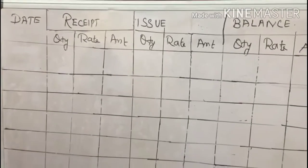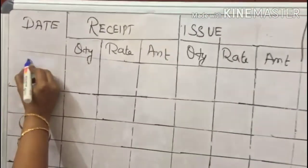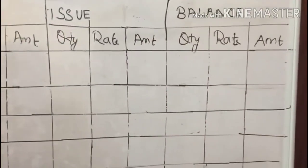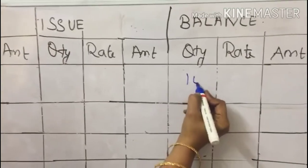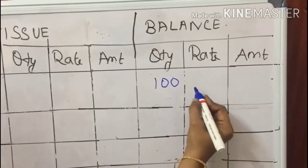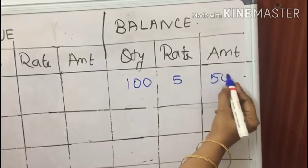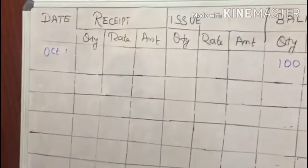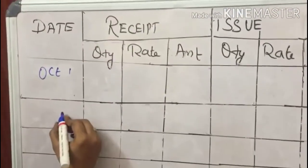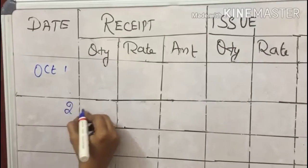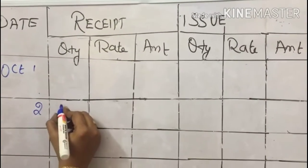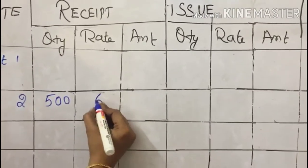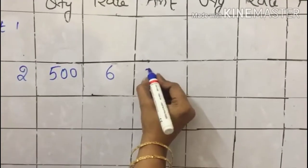In the problem, October 1 is given as opening balance. So directly you have to make an entry in the balance column: 100 units at the rate of rupees 5, so the amount will be 500. Next date, October 2, they have given received 500 units. So in the receipt column, you have to write 500 units at the rate of rupees 6. Multiply to get 3000.